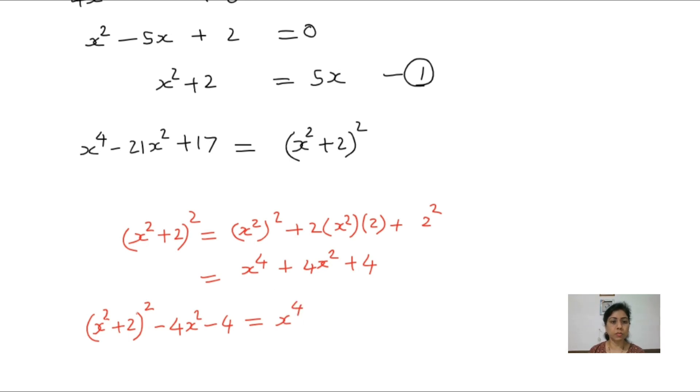This x to the power 4 value we can write here. We already written here x square plus 2 whole square. Now we can write minus 4x square minus 4. This is actually, can you see here, this is just x to the power 4 value. Now we can write this portion minus 21x square plus 17.